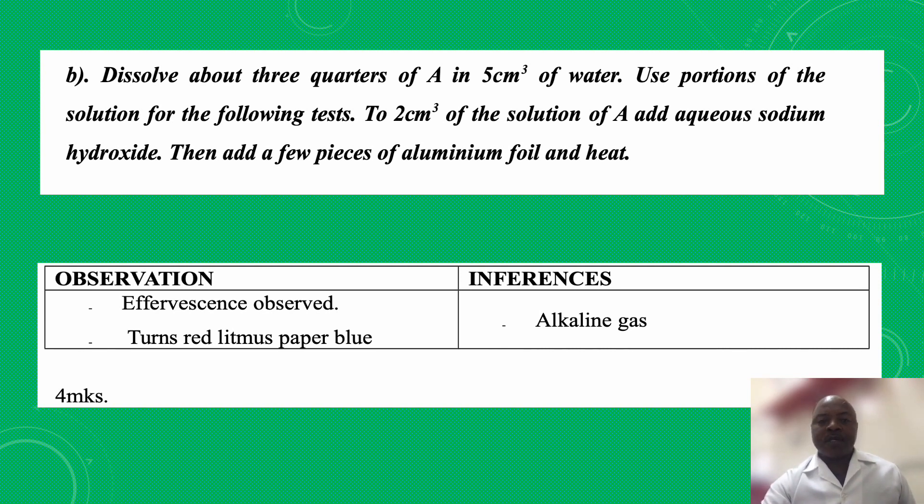Dissolve about three quarters of A in five cm cube of water. Remember to use deionized water, the distilled water please. Do not use tap water. Use portions of the solution for the following tests. To 2 cm cube of the solution of A, add aqueous sodium hydroxide. Then add a few pieces of aluminum foil and heat.